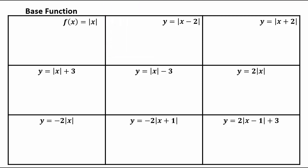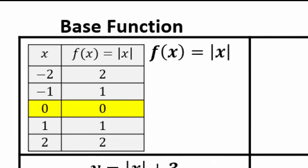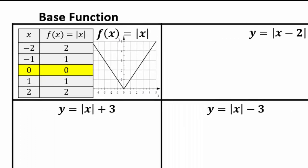Here is the table of values for absolute value x: (0,0), (-1,1), (1,1), (-2,2), (2,2). That's how the absolute value x graph looks. If you know how the graph looks, you don't have to make the table — it's just there for someone who forgot the basic shape from the library of functions.